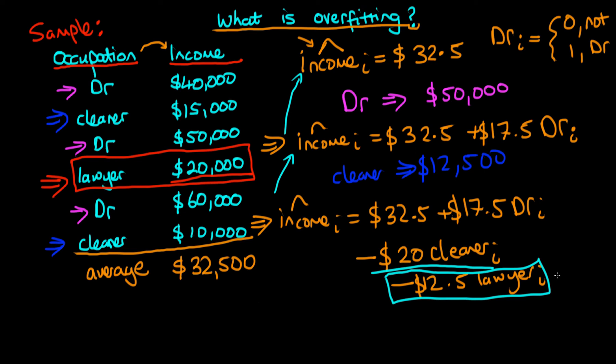In statistical language, essentially what we've done is we've built a model that overfits the data. Including this last term is meaning that our model will actually do worse on out-of-sample prediction. Essentially we fit the noise in our sample rather than fitting the signal. The signal in our sample is probably okay for whether an individual is a doctor and whether or not they're a cleaner, but for a lawyer, because we only have one data point, we really aren't confident at all and hence shouldn't include that in our model.